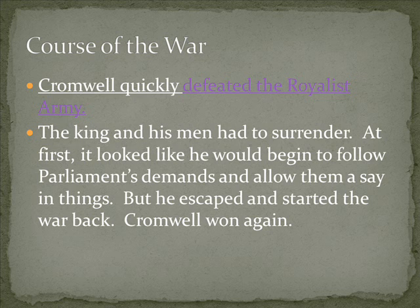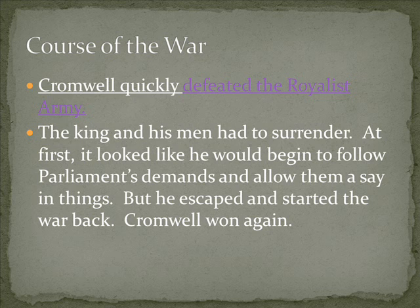At first it looked like everything was going to be okay. The king would allow Parliament a say in government, the king would listen to Parliament as they gave him ideas, and everybody was going to be happy. But King Charles didn't want to give up. Even though he had already lost and already surrendered, he decided to try it all over again. The king got his men together and started fighting back. He escaped from where they had him and started the war all over again. And once again, Oliver went out and beat the daylights out of the king and his supporters.